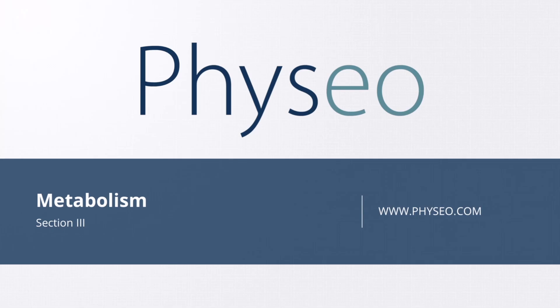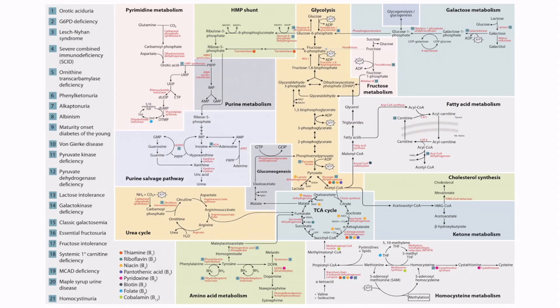Welcome to the third section of metabolism. In this section we'll be discussing pyruvate metabolism. This is the metabolic map provided in section 1 of metabolism, and in this video we'll be focusing on pyruvate metabolism. You can see pyruvate right here. Notice that pyruvate is a central molecule in the map — this is fitting because pyruvate is a versatile substrate which can be shunted to and from many different pathways.